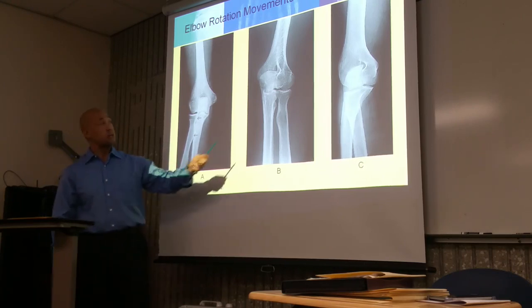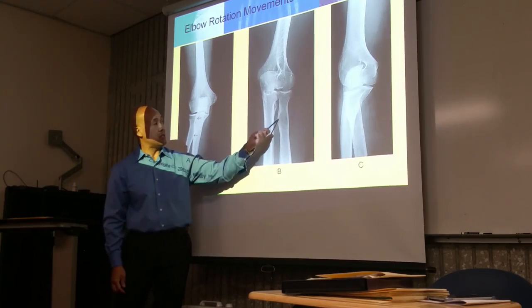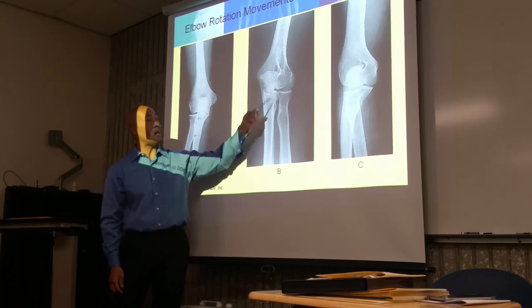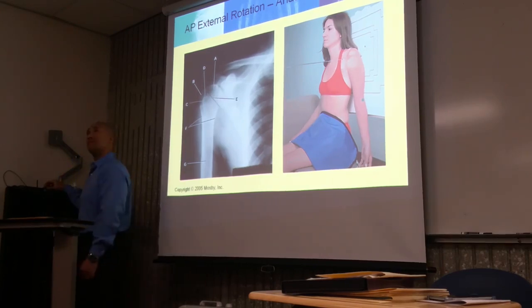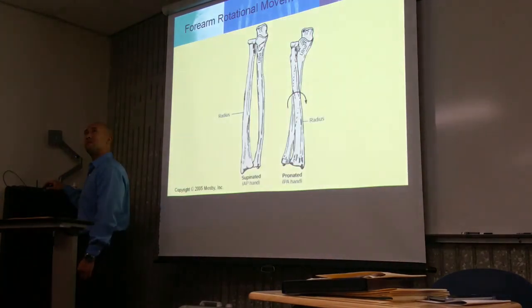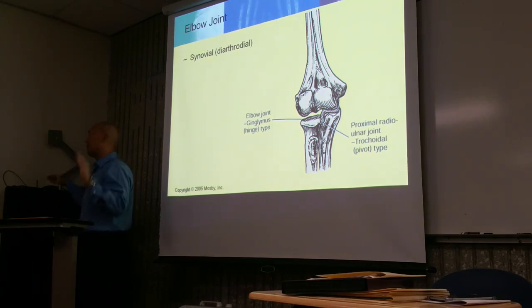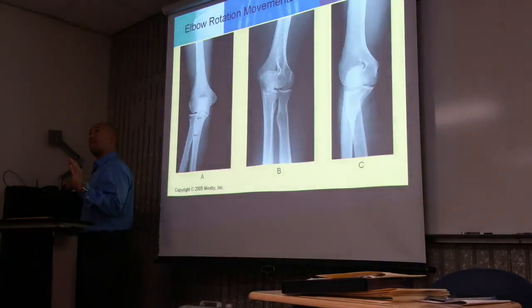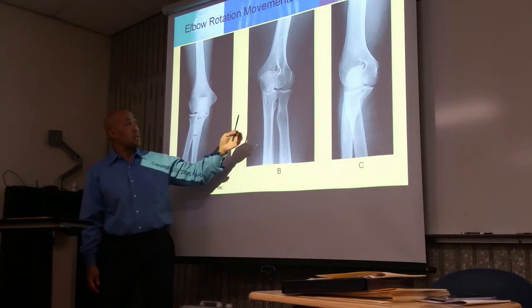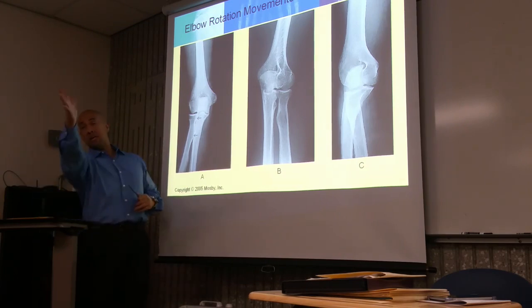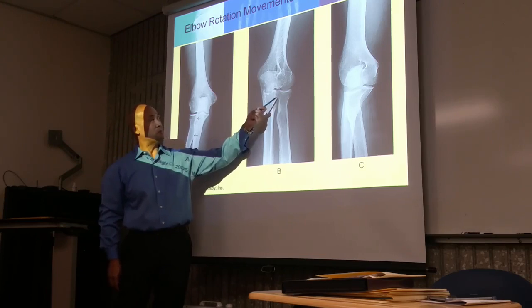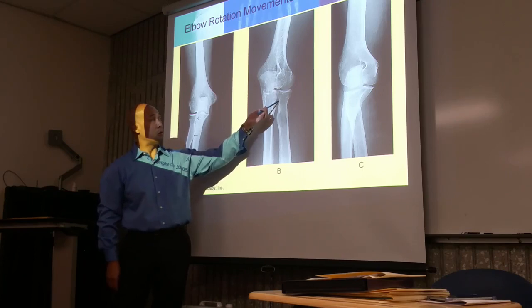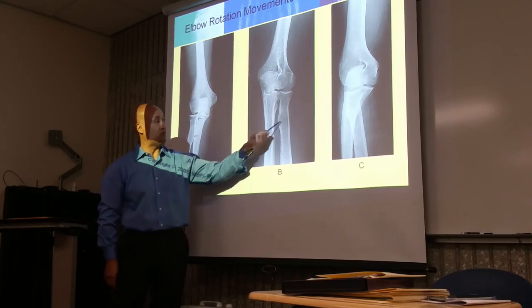In an external oblique — pinky up, thumb down — the radial head and radial tuberosity are free from superimposition, and we can see the proximal radial ulnar joint clearly. The tuberosity is also free from superimposition in this position.